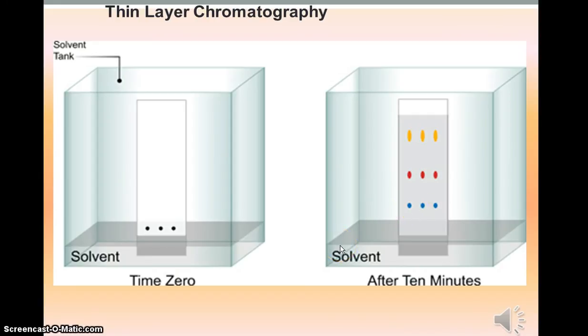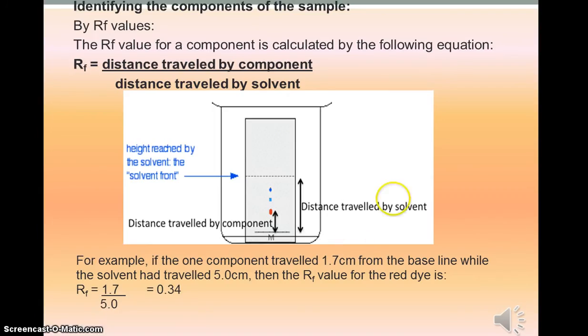To give a value to the proportion of time, we work out the RF values. That is simply the distance travelled by the component divided by the distance travelled by the solvent. If we look at this red dye, you can see it has moved 1.7 centimeters, whereas the whole solvent has moved up to 5 centimeters. So the RF value is 1.7 divided by 5, which is 0.34. RF values will always be less than 1, because they're always a proportion of the total distance.